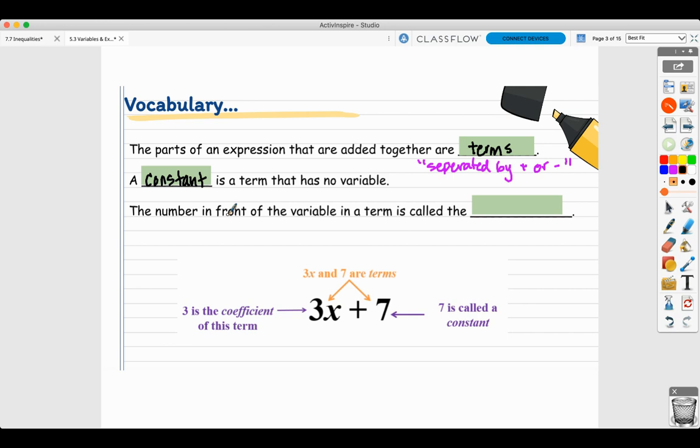The number in front of a variable in a term is called a coefficient. Coefficients only exist when there is a variable. For instance, over here, three is a coefficient. This just means 3x, which means three times x. Whatever the number is in front of your variable, that coefficient is being multiplied to that variable.